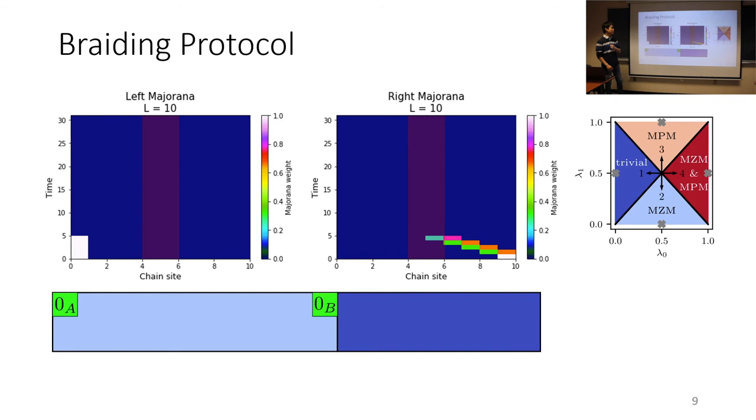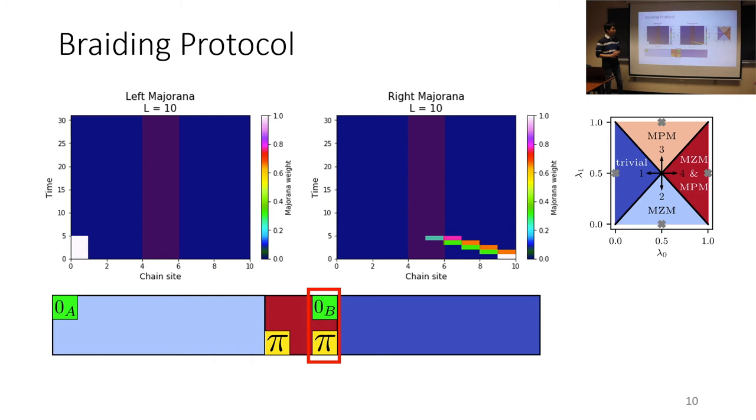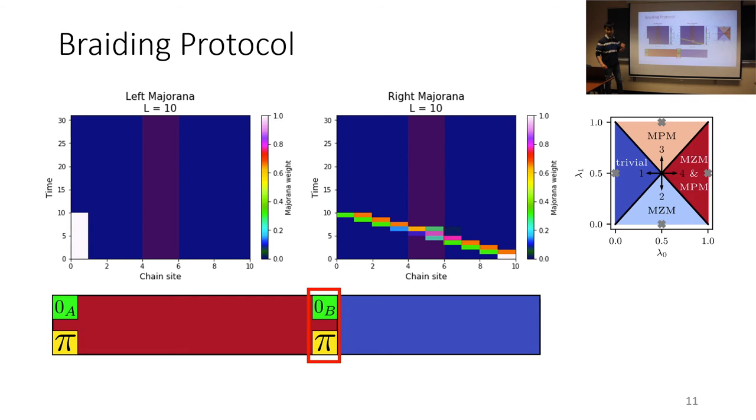So we start off with the zero edge modes at the end. Then we move the edge mode on the right towards the middle. We create two pi edge modes in the middle and one of them ends up coupling to the zero.